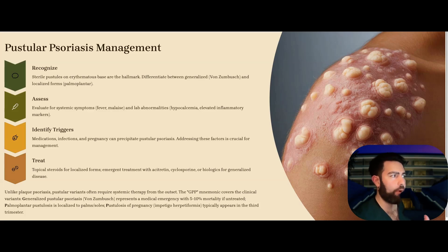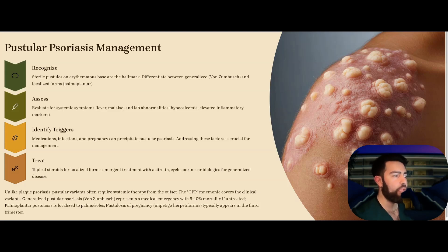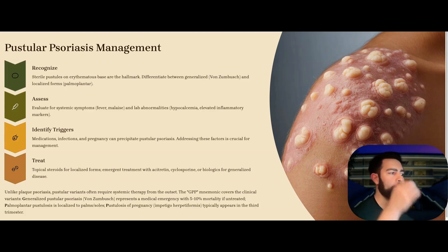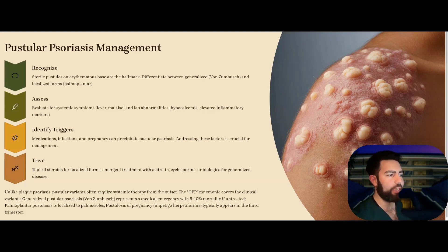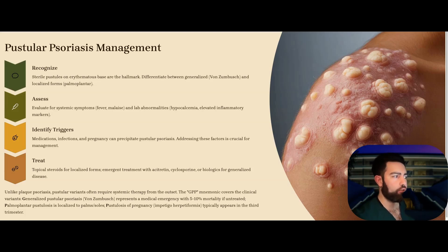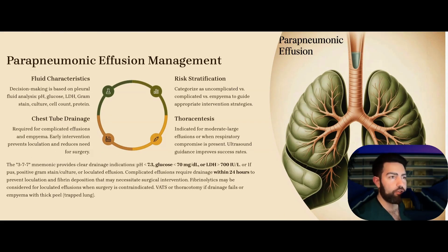Next, pustular psoriasis compared to regular psoriasis. Pustular psoriasis presents with sterile pustules on an erythematous base — generalized versus localized. The localized forms can be palmoplantar and can be treated with topical steroids, but sometimes they may become disseminated and require biologics, cyclosporine, or acitretin. Generalized pustular psoriasis is a medical emergency with about 5–10% mortality, and triggers include pregnancy, infection, and certain medications.